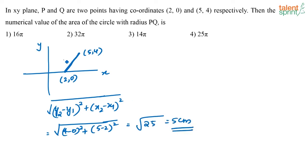So the length of this line is 5 centimeters. Now I have to find the area of the circle whose radius is 5. What is the area of such a circle? πr² which is equal to π into 5² which is equal to 25π. So your required answer is option 4, 25π square units.